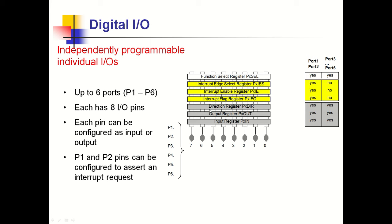For Port 1 and Port 2 only, there are three additional interrupt registers: interrupt edge select (IES) to choose rising or falling edge sensitivity, interrupt enable register to enable or disable interrupt generation, and interrupt flag register which is set when an interrupt is generated. The other ports only have direction, output, and input registers.